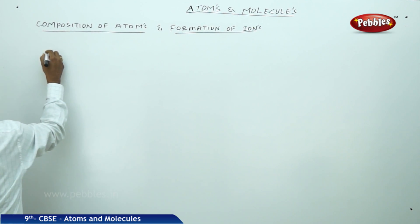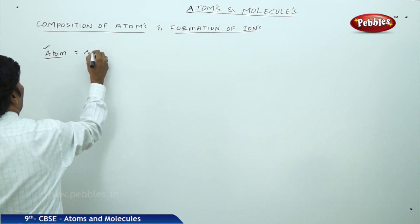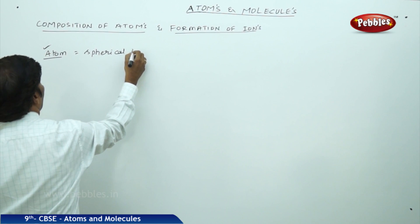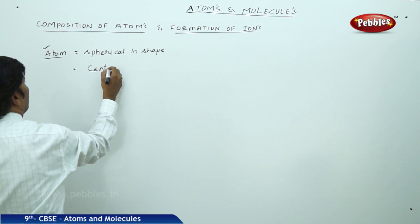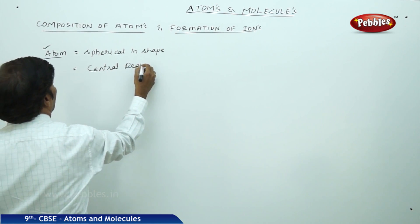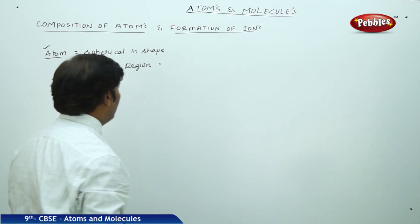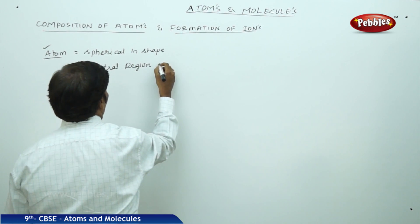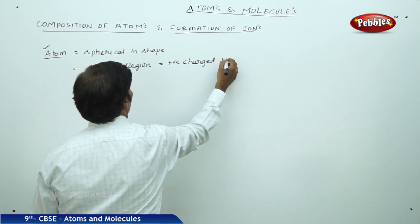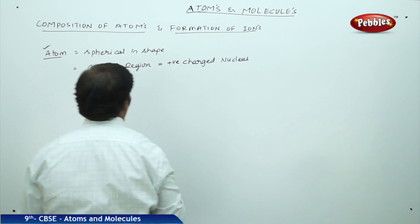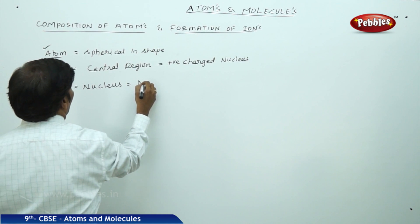If you consider an atom, you know very well that an atom is always spherical in shape, and the central region of the atom is made up of a positively charged region called the nucleus. This nucleus is made up of nucleons.